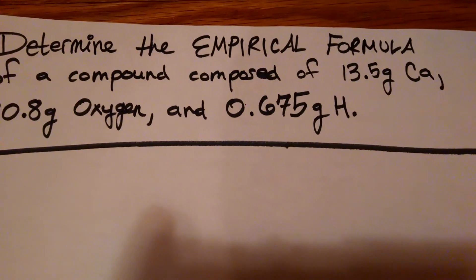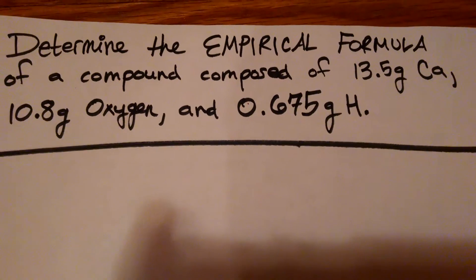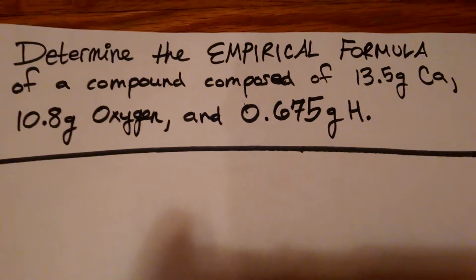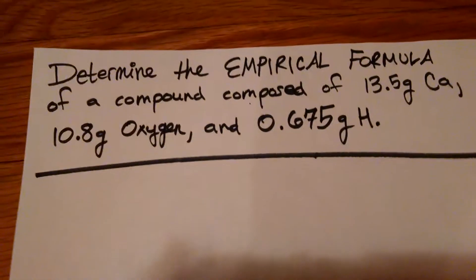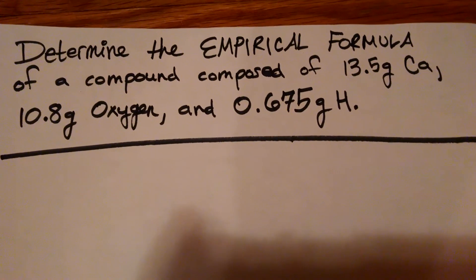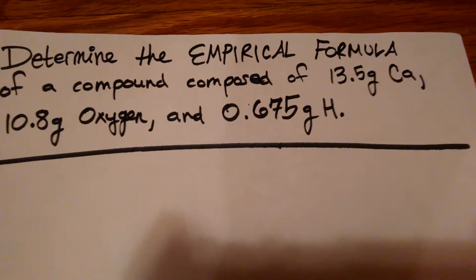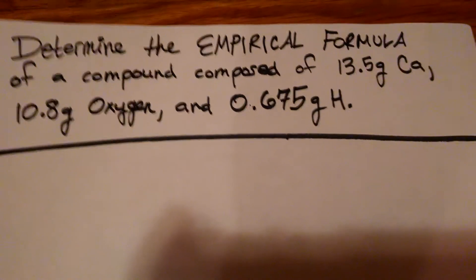We have 13.5 grams of calcium, a little less than 11 grams of oxygen, and 0.675 grams of hydrogen. An empirical formula is pretty much the elements in a compound that are reduced to the lowest whole number ratios. We'll get to that part when we start doing some calculations.